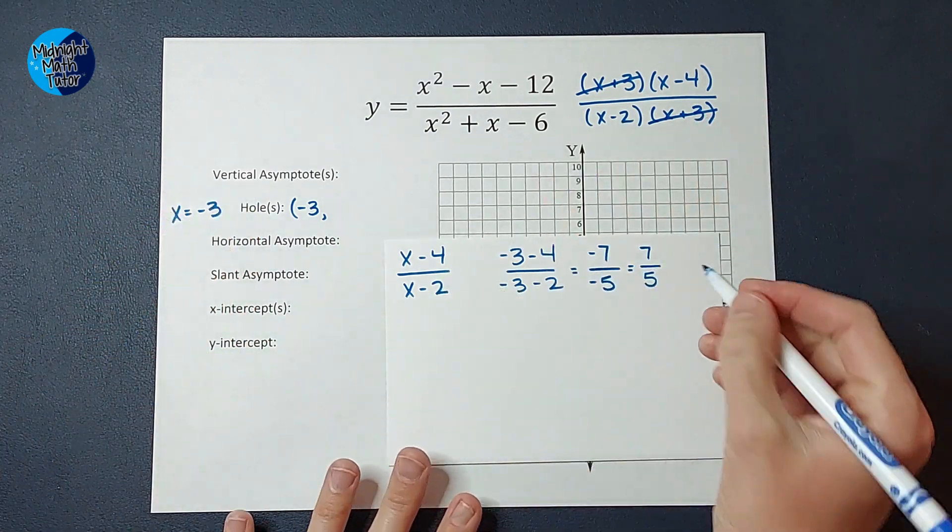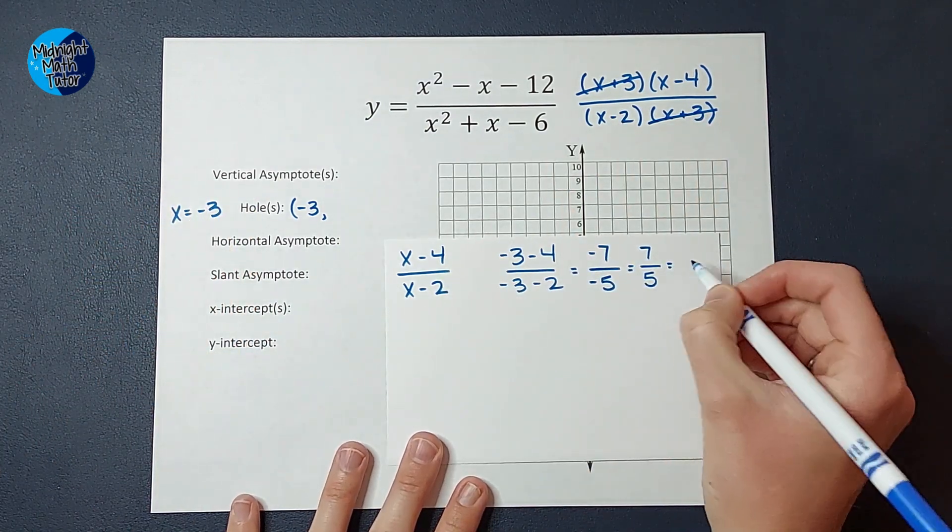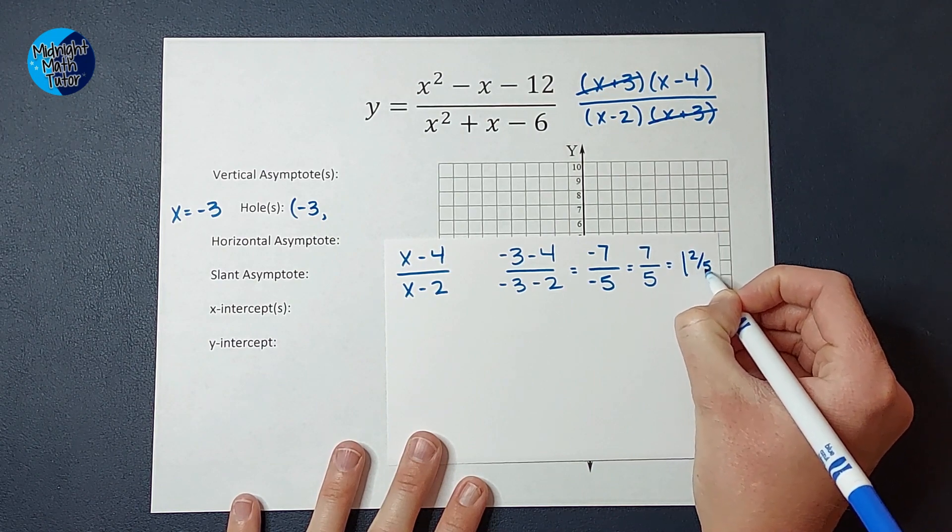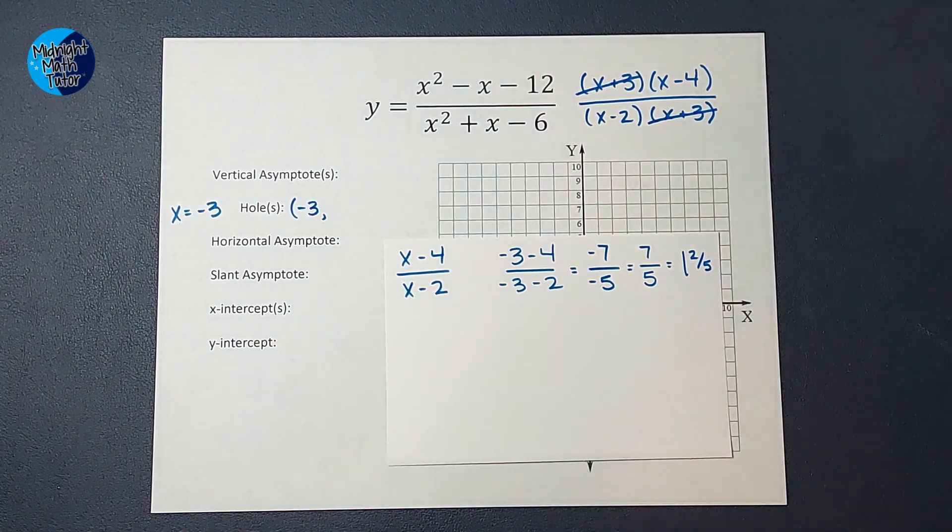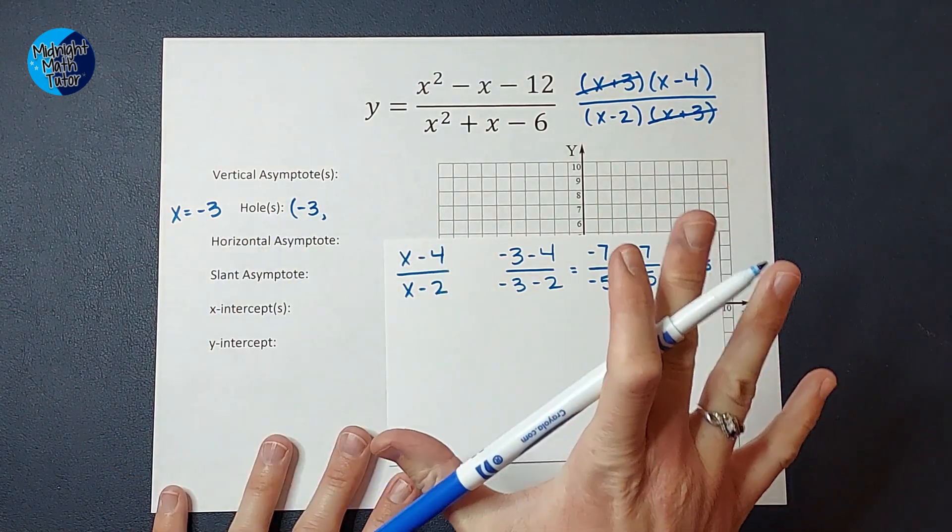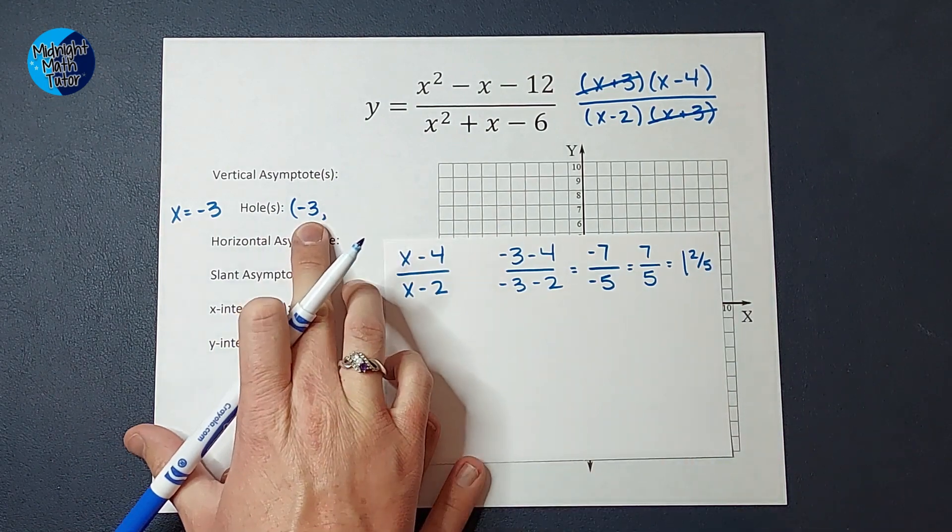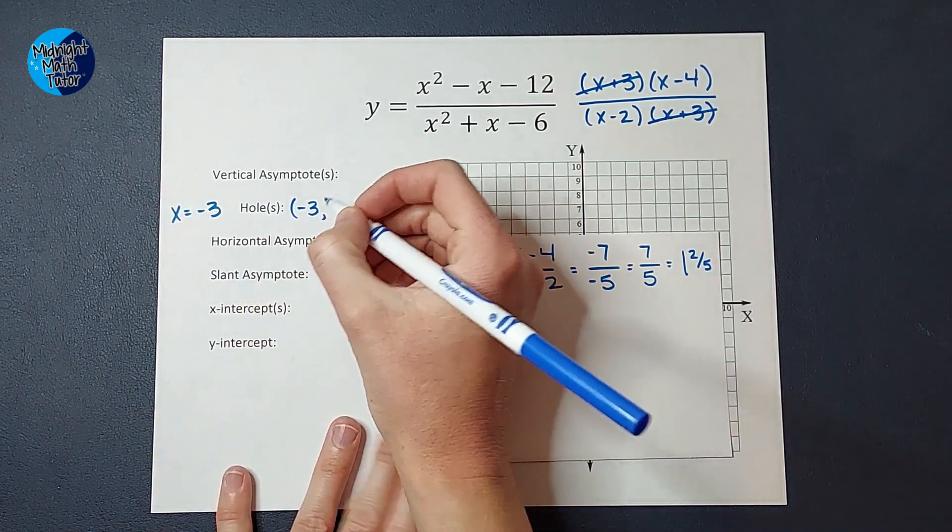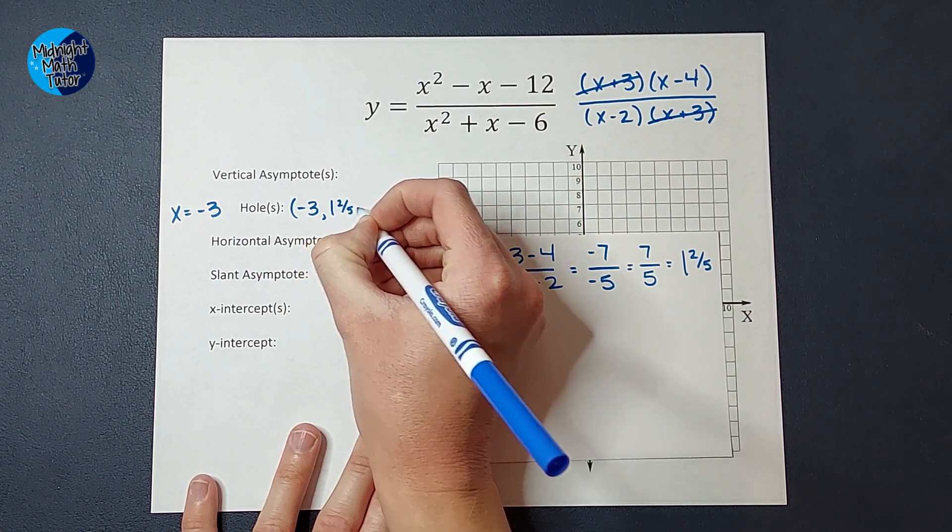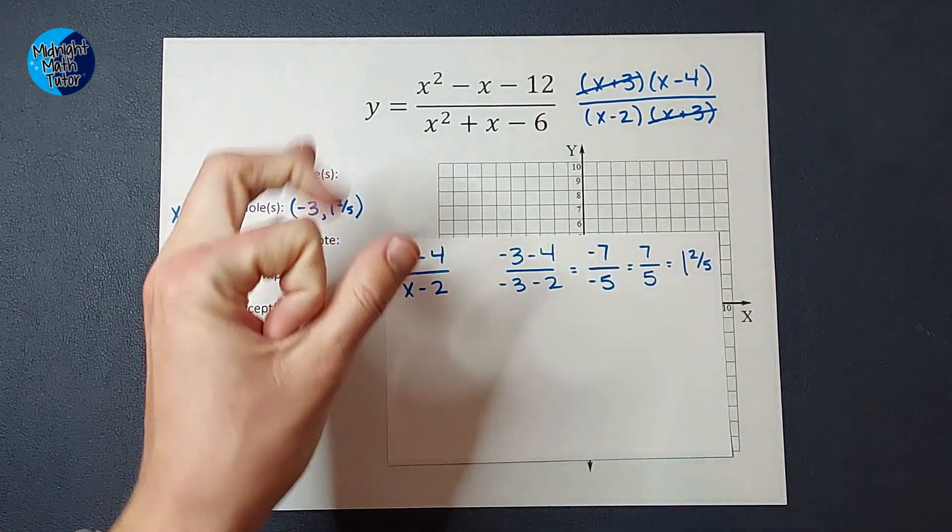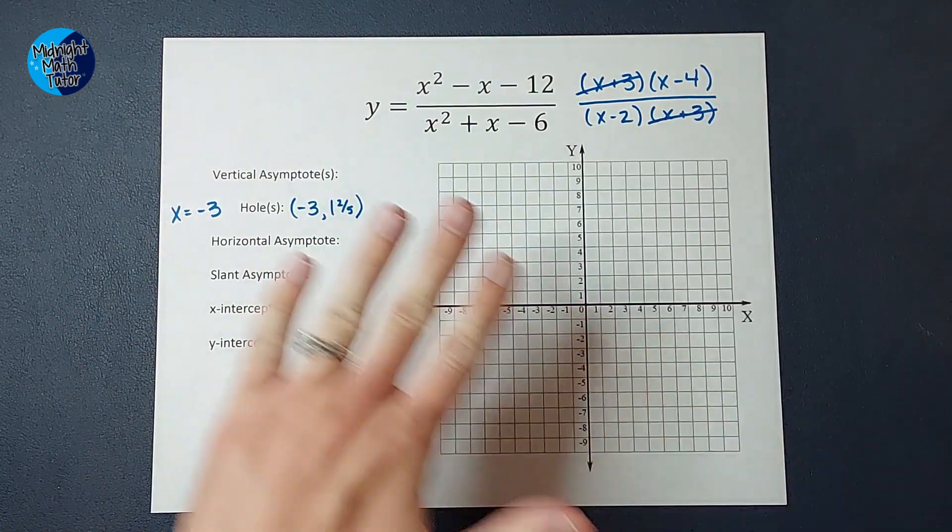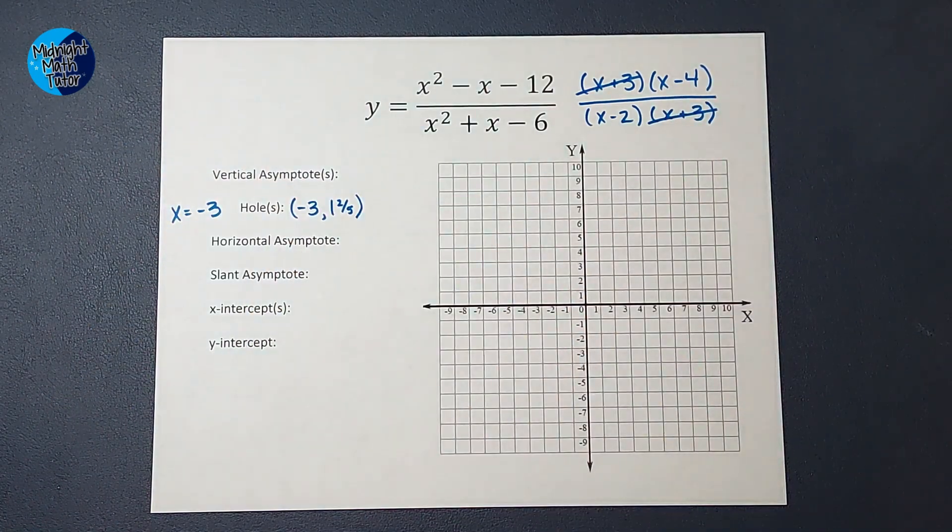Don't freak out because it's a fraction. We can leave it as 7 fifths or we can convert it into a mixed number, which is 1 and 2 fifths. I kind of like the mixed number. It helps me envision it better. But if you like 7 fifths, yo, go with it. So what does this tell me? This tells me at the point negative 3 for x and 1 and 2 fifths for y, there is going to be a hole in my graph. And we will represent that in just a minute.